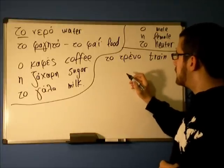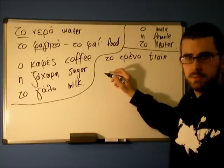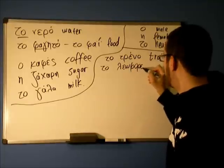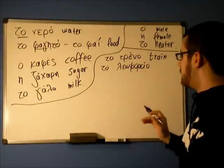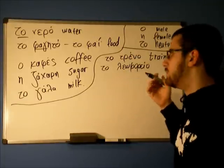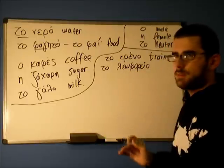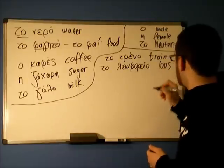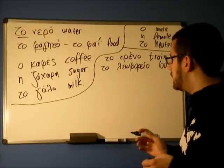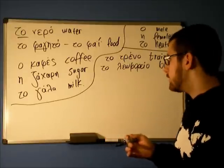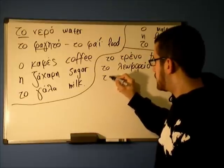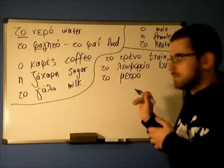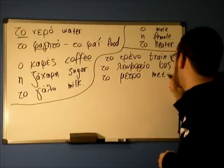And for example the bus — it's "to leoforio". I'm not sure if this originates from "laos", but if it does, then this actually means "people bringer" — something like that, a people carrier. Bus. Another means of transportation — at least it exists in Athens and Thessaloniki — is "to metro". And as you can see, it's metro. It's not different. It's the metro.